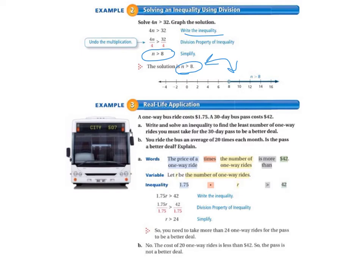So in order to make that a good deal, the price times the number of one-way rides has to be more than $42 in order to make it a better deal. So our variable is going to be R, and that's going to be the number of one-way rides.